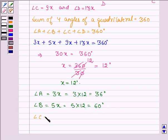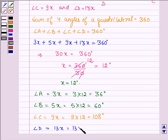Angle C equals 9x, which is 9 times 12, giving 108 degrees. Lastly, angle D equals 13x, which is 13 times 12, giving 156 degrees.